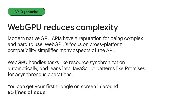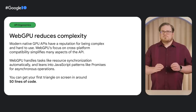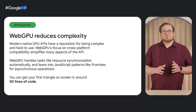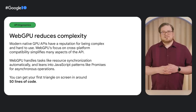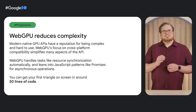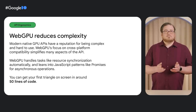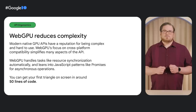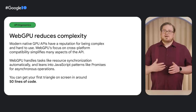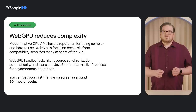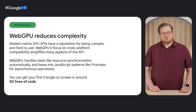Modern graphics APIs have a reputation for complexity, trading simplicity for extreme optimization opportunities. WebGPU, on the other hand, is focused on cross-platform compatibility, handling traditionally difficult topics like resource synchronization automatically in most cases. This has the happy side effect that WebGPU is easy to learn and use. It relies on existing features of the web platform for things like image and video loading, and leans into well-known JavaScript patterns like promises for asynchronous operations. This helps keep the amount of boilerplate code needed to a minimum — you can get your first triangle on screen in under 50 lines of code.